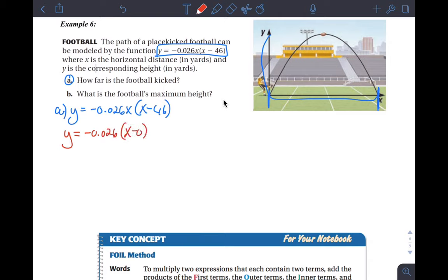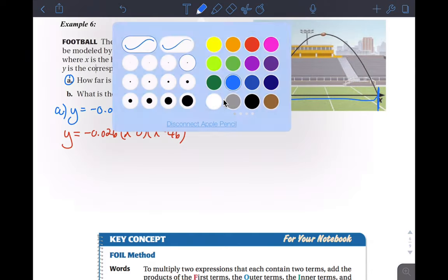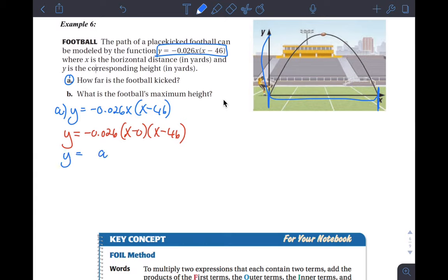You can rewrite it like this: x minus 0 times x minus 46. Now it's kind of easy to see what's going on here is a times x minus p times x minus q. So now you can see there's just a 0 after the x, take nothing away from x, you still have x. So really what we have here is called intercept form. That tells us this is an intercept and this is an intercept.